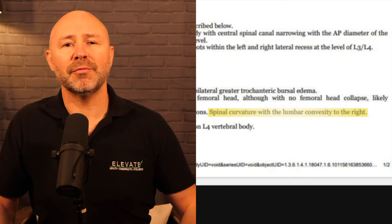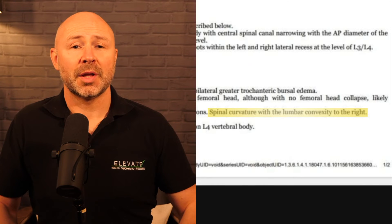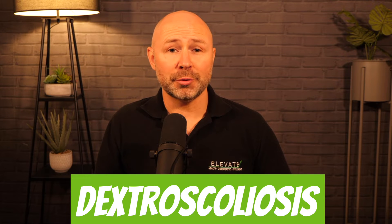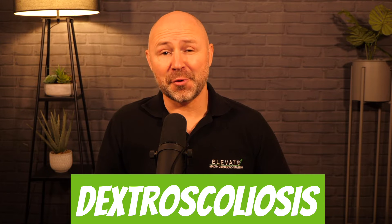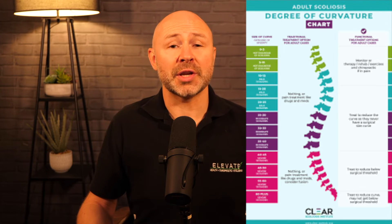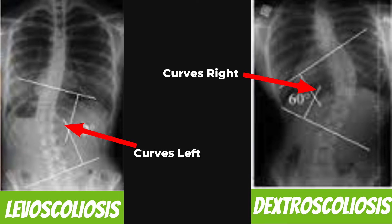Spinal curvature with lumbar convexity to the right — this can also be called a dextroscoliosis, which is a form of scoliosis. The degree of this scoliosis was explained in a separate X-ray report supplied by the client: it was a 12-degree curve, which is considered mild. Just to give context, anything below 10 degrees doesn't warrant being diagnosed as a scoliosis. A curvature to the left is called a levoscoliosis; curvature to the right is a dextroscoliosis.